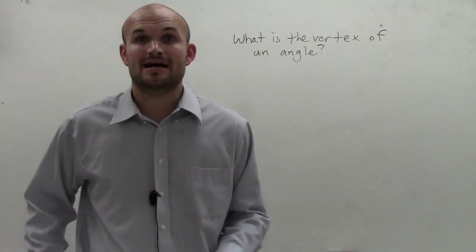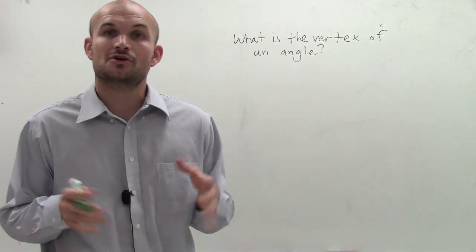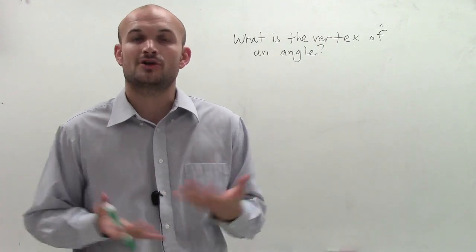Let's not make this any more complicated than it has to be. The vertex of an angle is the endpoint of your two rays, where your two rays come together to form your angle.